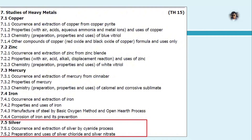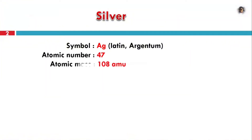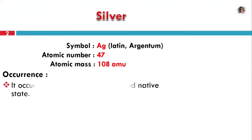Hello everyone. Heavy metals, last part — that is silver. First, my introduction: symbol Ag. Ag comes from the old Latin word Argentum. Atomic number is 47. Atomic mass is 108 AMU.